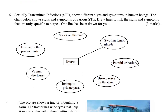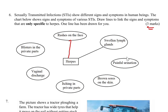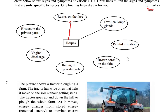Question 6: sexually transmitted infections (STIs) show different signs and symptoms. Draw lines to link the signs and symptoms that are only specific to herpes; one line has been drawn for you — swollen lymph glands. We need to draw three lines total. One symptom is blisters on the face. The remaining herpes-specific symptoms include blisters in the private parts and others. Give your answers in the comment section.